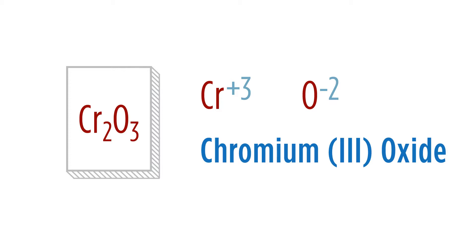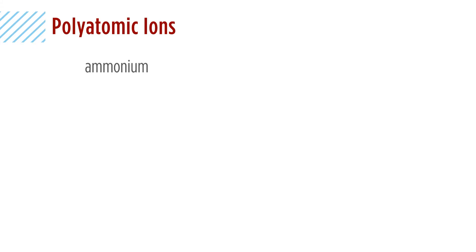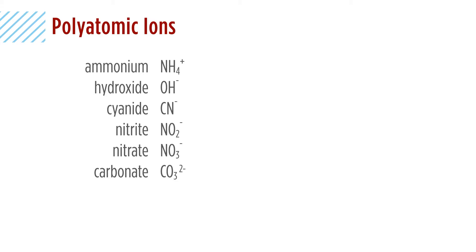These were some simple ionic compounds. We can make these slightly more complicated by using polyatomic ions. We need to learn the polyatomic ions — I'll list a few here, though the full list is longer depending on your text. There's usually only one common cation: ammonium, NH4+.